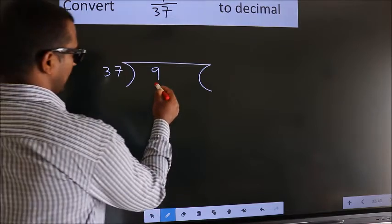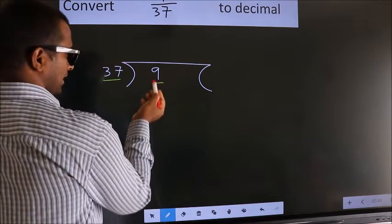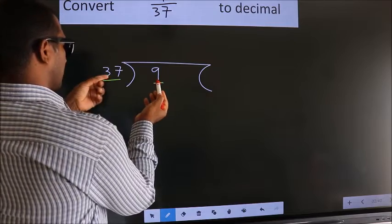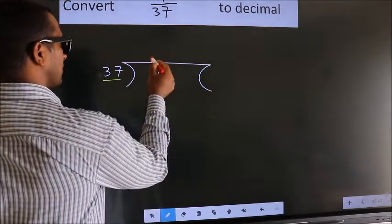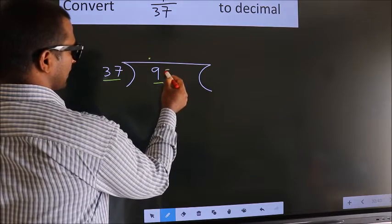Next, here we have 9, here 37. 9 smaller than 37. So what we should do is, we should put dot here, take 0 here.